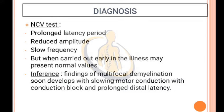Diagnosis: The first diagnostic test is the NCV (nerve conduction velocity) test. Findings include prolonged latency period, reduced amplitude, and slow frequency, although when carried out early in the illness it may present normal values. Inference: multifocal demyelination soon develops with slowing motor conduction, conduction block, and prolonged distal latency.